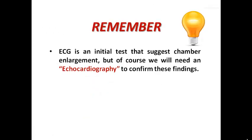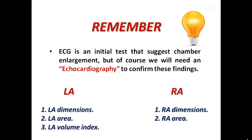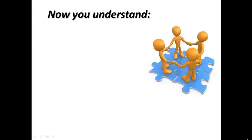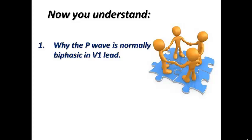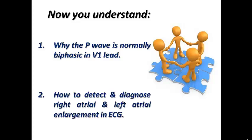Remember that ECG is an initial test that suggests chamber enlargement, but you will need echocardiography to confirm the finding. In cases of left atrial enlargement or right atrial enlargement on ECG, you need to check the atrial dimensions and areas on transthoracic echocardiography. These are preliminary diagnoses from ECG that require echocardiographic confirmation.